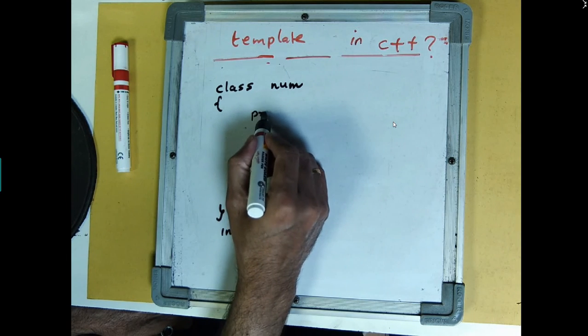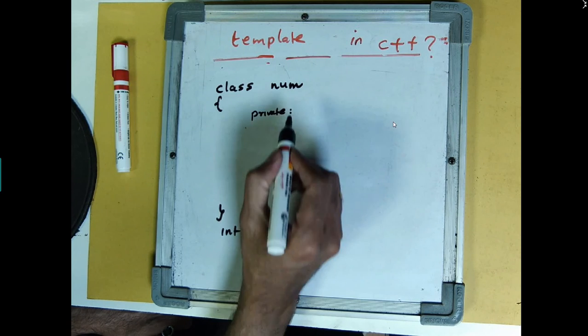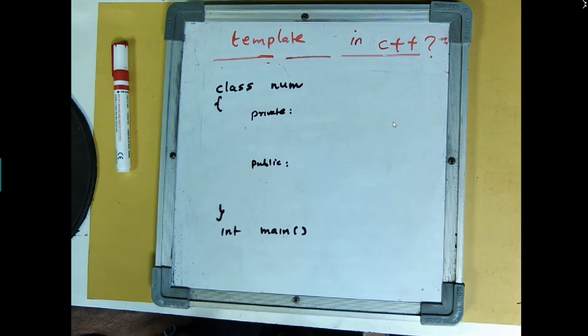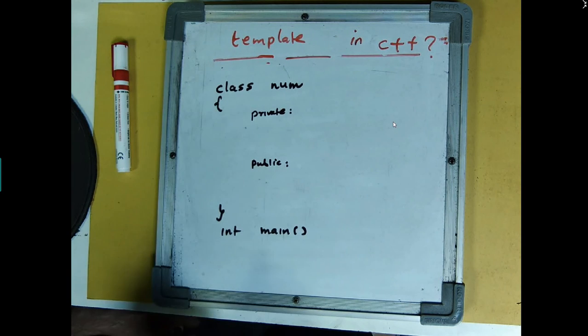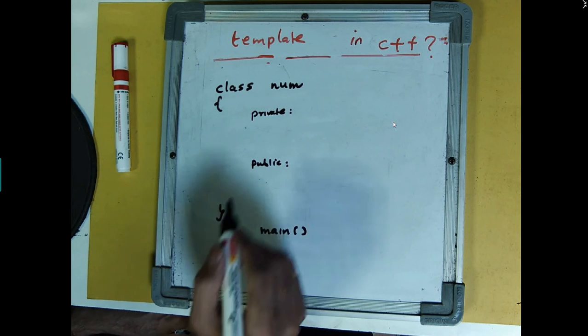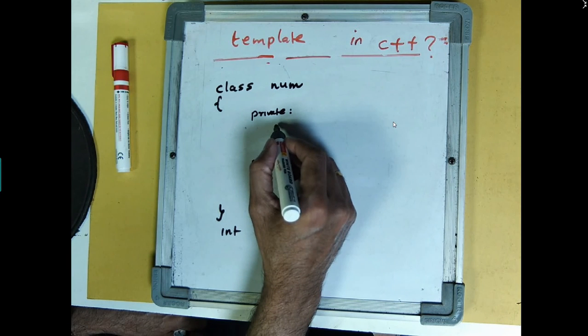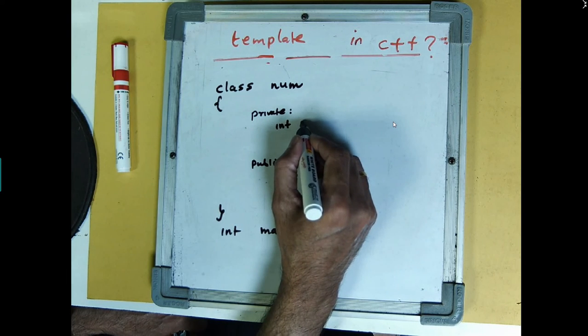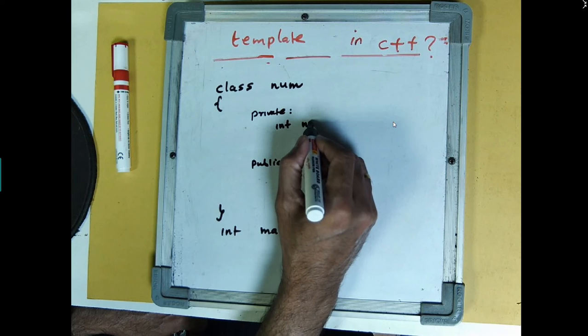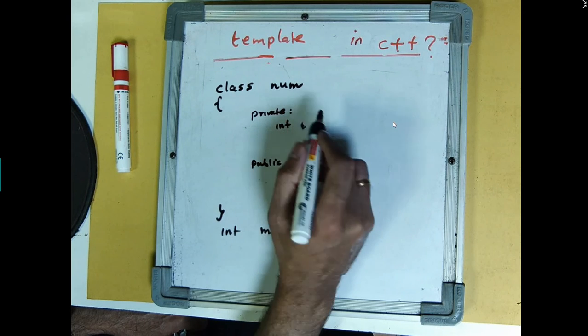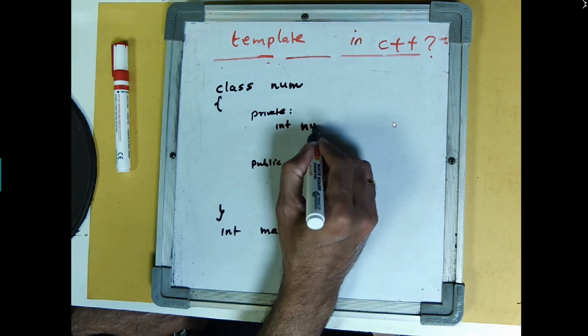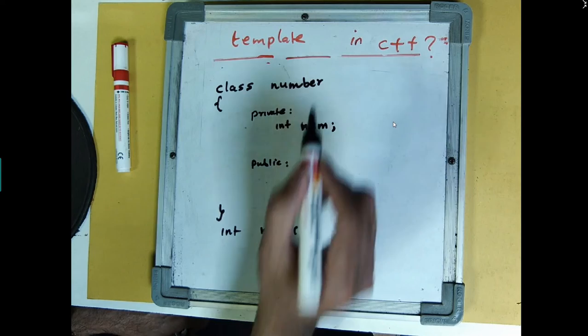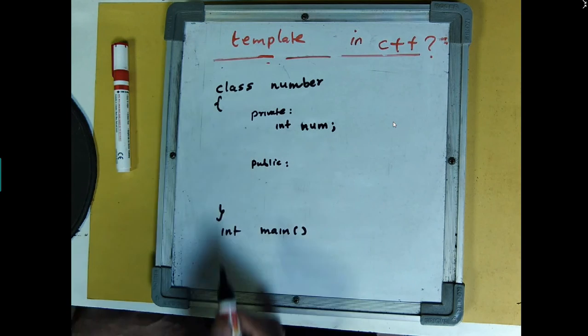Now, we know that we have a private and public section in this. In the private section, let's say I have an integer called number. And let's make this class name as number, that's okay, integer number.